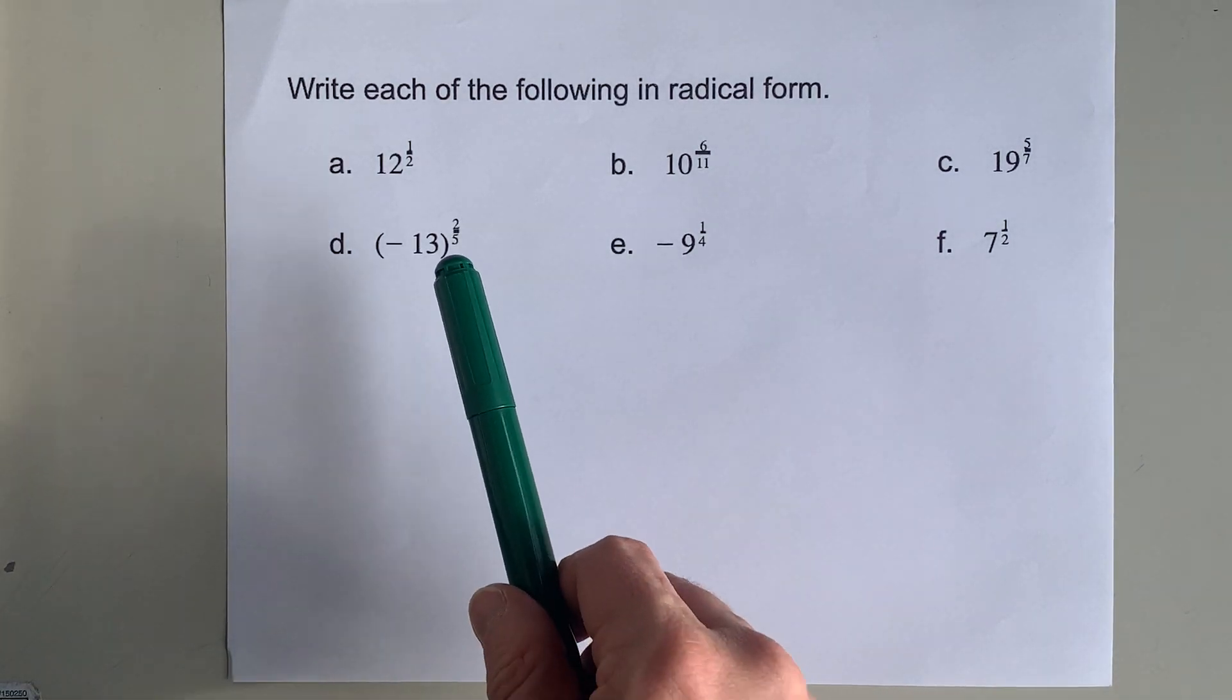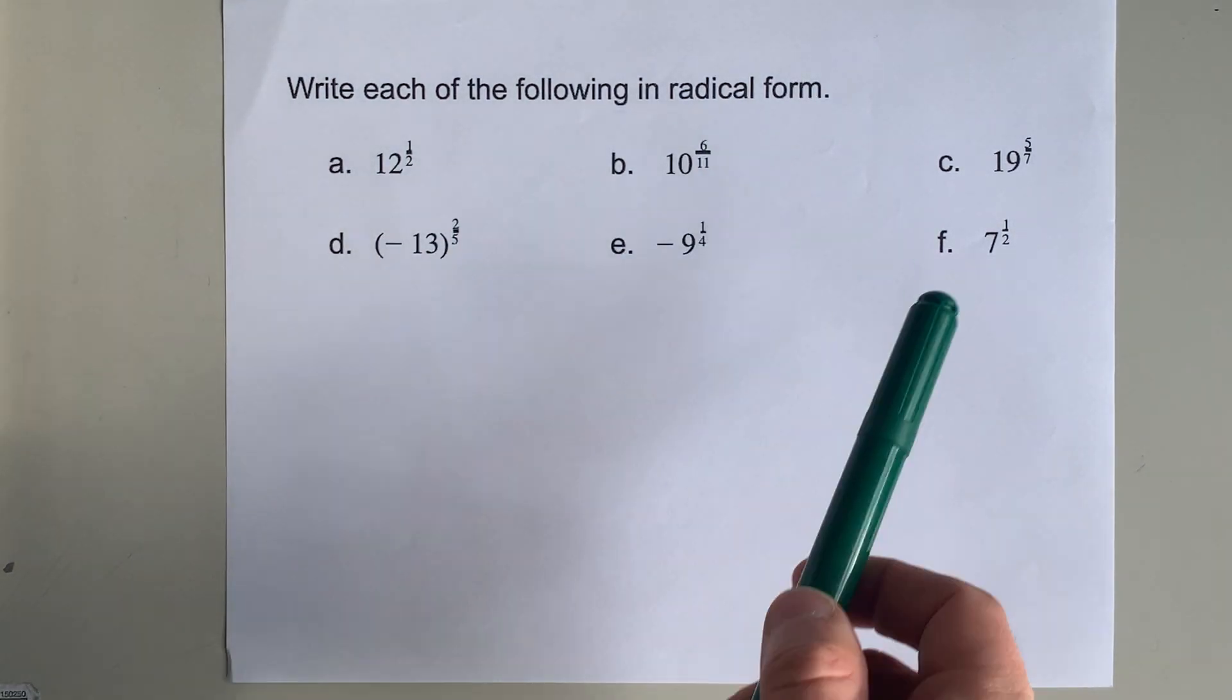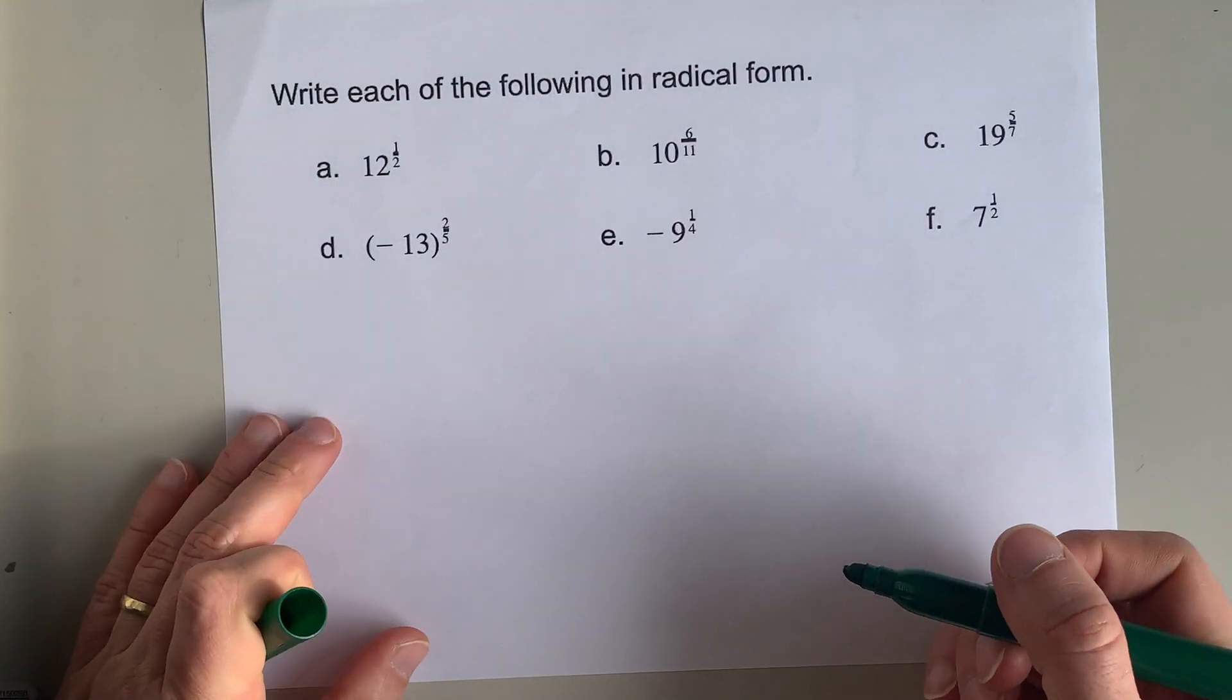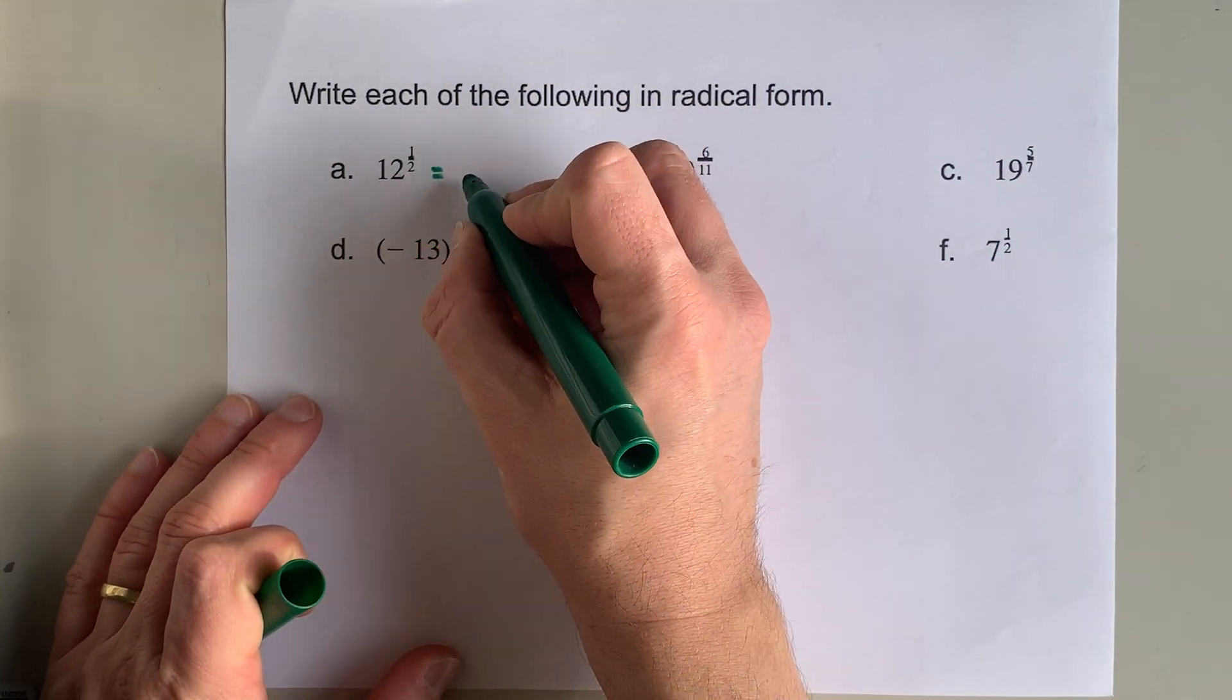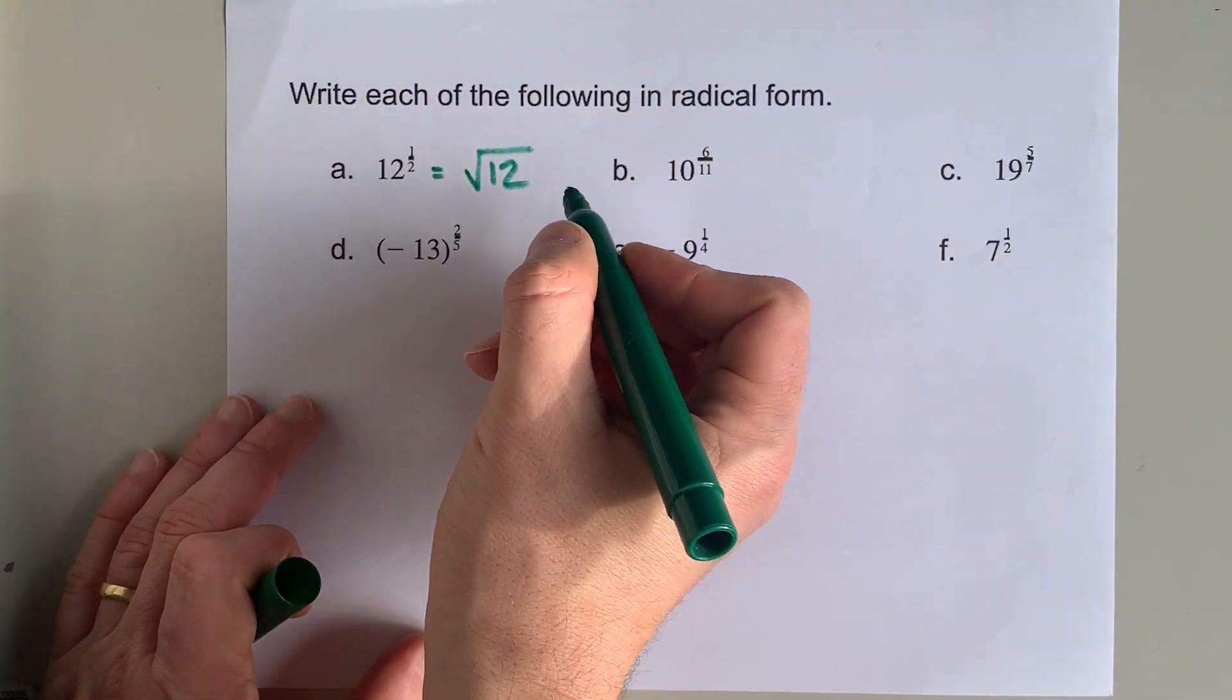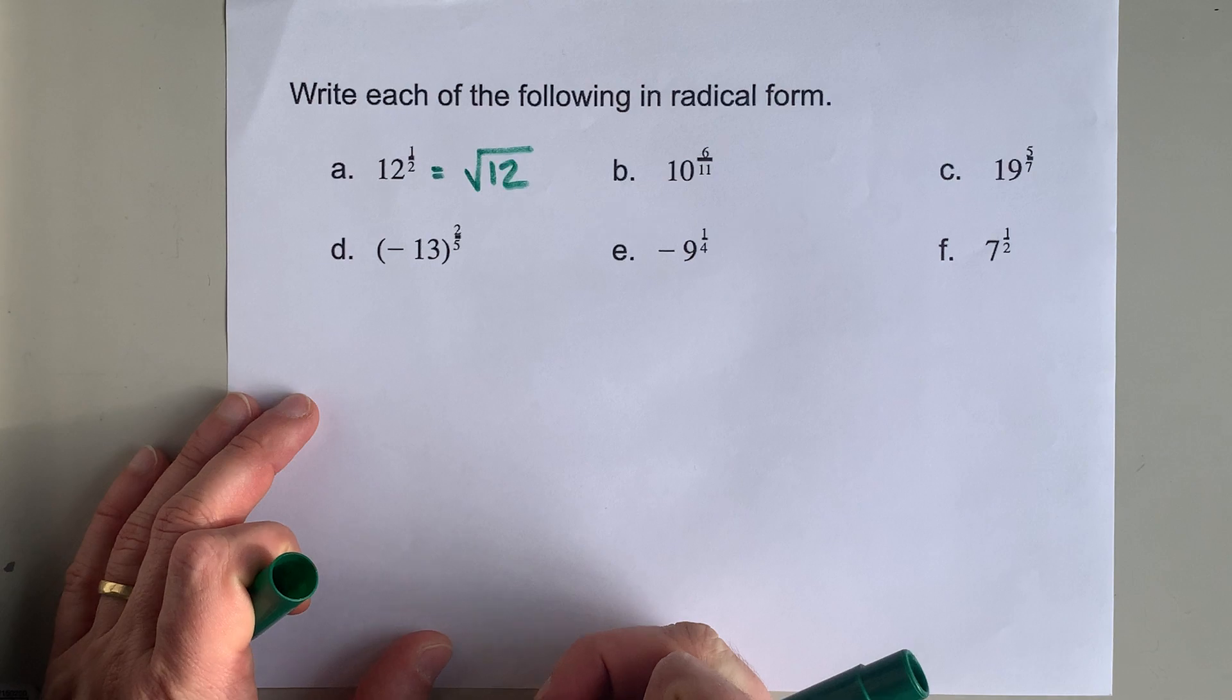We are going to convert exponential form to radical form. Did you know that 12 to the power of 1 half is the same as writing the square root of 12? Those are equivalent. That's worth memorizing, to be honest.